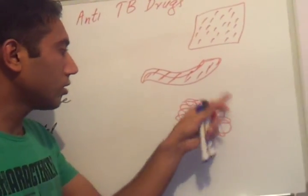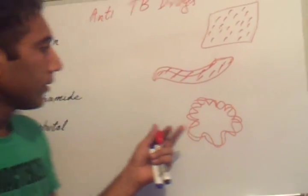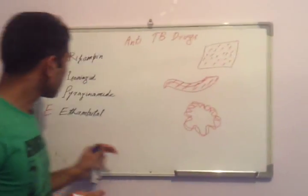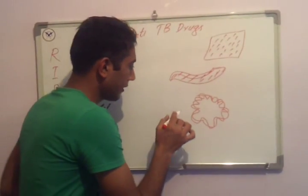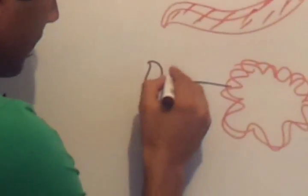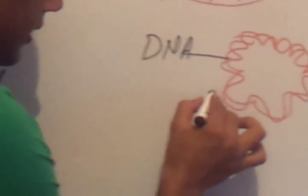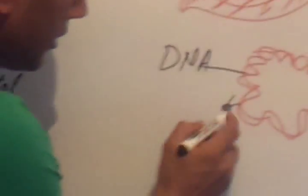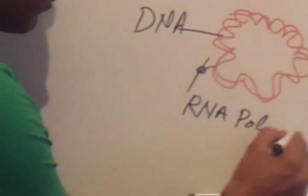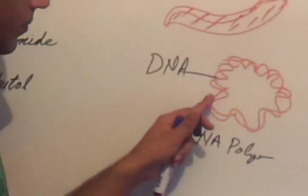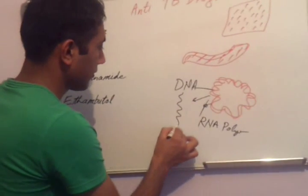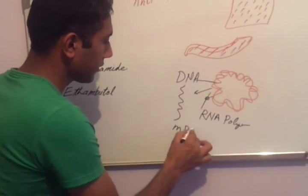Bacteria do not contain any type of nuclear envelope as our cells do. So these bacterial cells are called prokaryotes, and human and other animal cells are called eukaryotes. Rifampin inhibits an enzyme called DNA-dependent RNA polymerase. When this enzyme acts, it transcribes DNA into messenger RNA. From the DNA molecule, messenger RNA is produced — this process is called transcription.